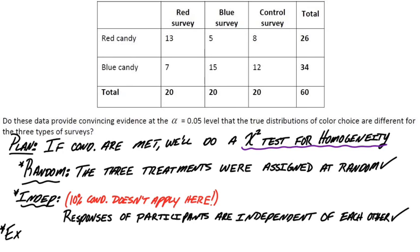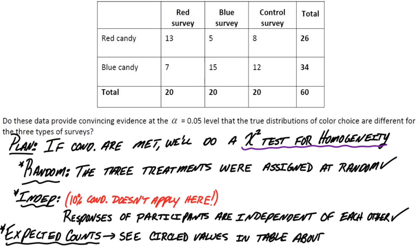Okay, and the last condition has to do with our expected counts. Expected counts. In fact, we have to show that they're all at least five. And I made the table big enough for this example that we can put them in each cell. And let's go ahead and make them the circled values. So we're going to put the expected counts up here. They'll be the circled numbers. So let's start with the first cell. The observed count, people that had the red survey as their treatment and chose the red candy was 13. That was the number observed. The expected count for that cell, remember, we do the row total, 26,